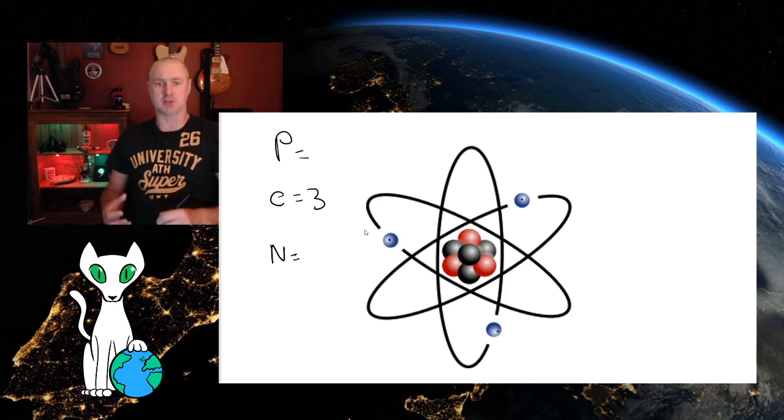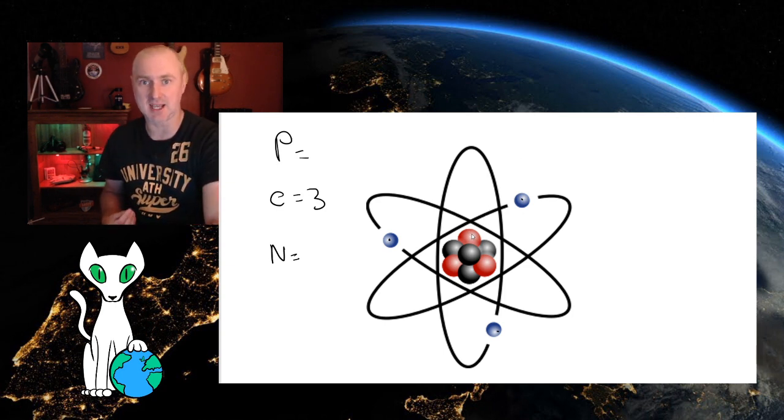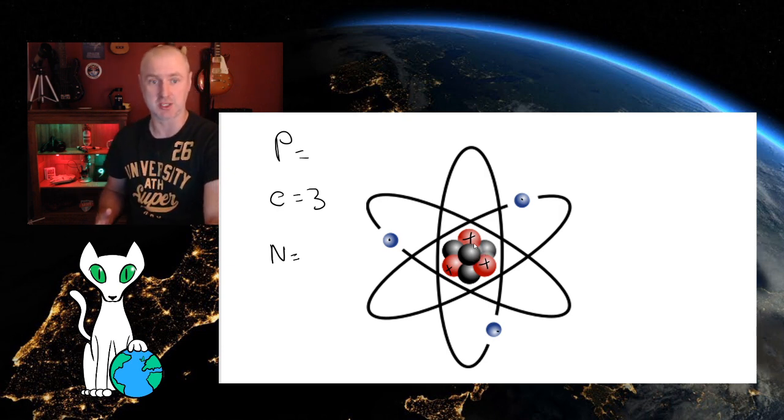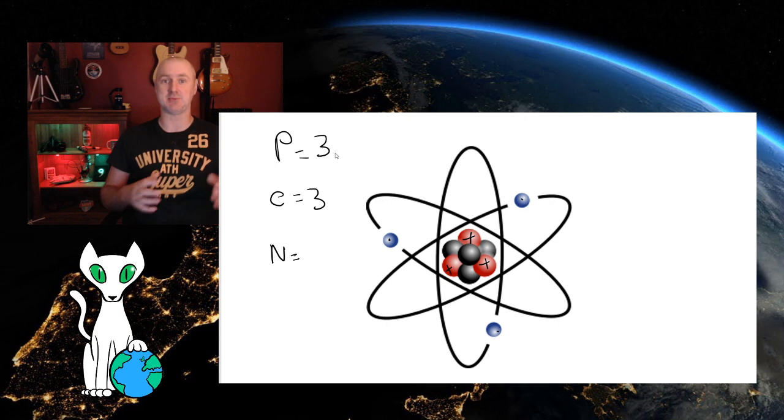The protons are what we find on the inside of the atom. They are in the nucleus and they have a positive charge. Now on this diagram it didn't actually show us which ones were the protons and which ones weren't. But I knew instantly that the red ones were the protons because actually we always have the same number of protons as we do electrons.